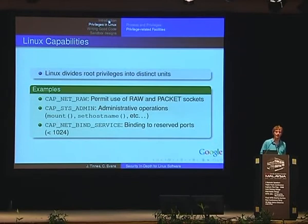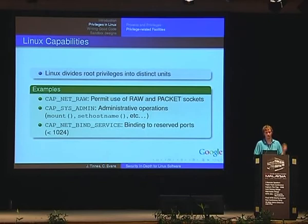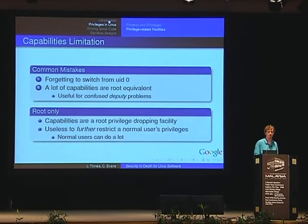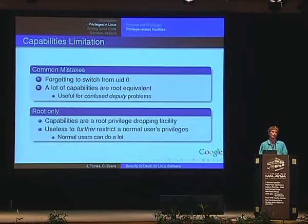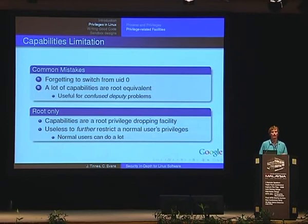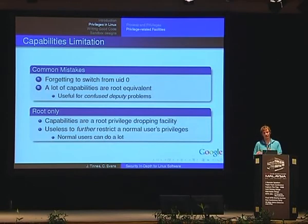Linux capabilities divide privileges into distinct units. For instance, CAP_NET_RAW allows you to use raw sockets, and there is also CAP_SYS_ADMIN, among roughly 20 others. Capabilities have a few limitations. A common mistake is forgetting to switch away from UID 0: even if you drop all or most capabilities, you must also switch from UID 0. Another mistake is that many capabilities are root-equivalent — for example, the capability that allows loading modules into the kernel is obviously root-equivalent. In that case, capabilities are only useful for confused deputy problems, though you can also make good use of them if you know what you're doing.